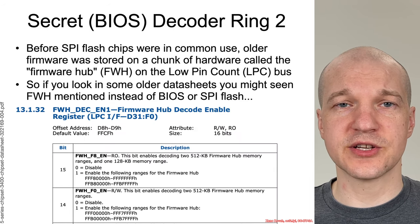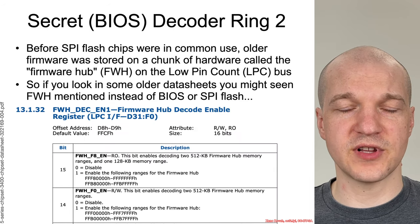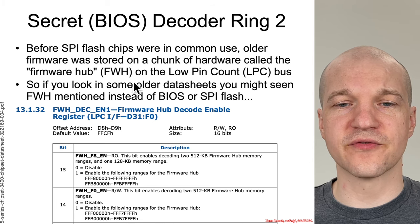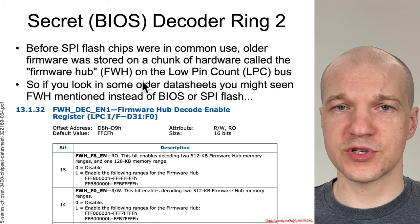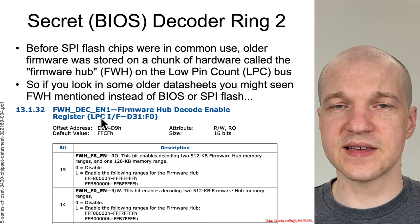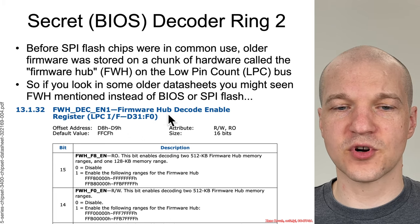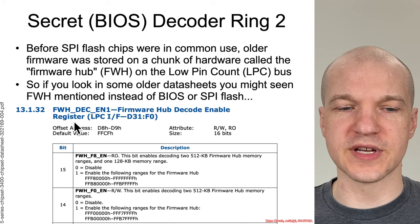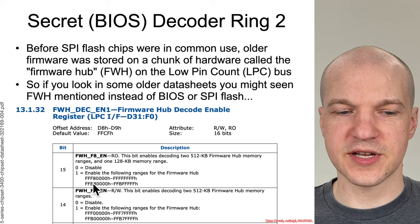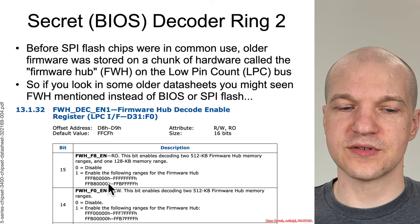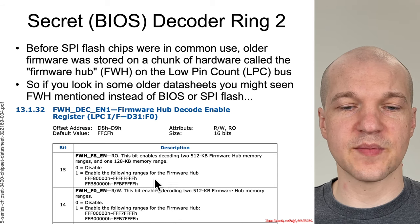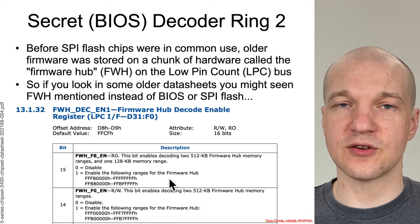If you look in the Intel datasheets, before the modern SPI flash chip became commonly used, there was an older thing called the Firmware Hub, which was on the low pin count bus. You could find things like the Firmware Hub Decode Enable Register, which said that the address range from 0xFFFF80000 all the way to 0xFFFFFFFF is going to decode the Firmware Hub.